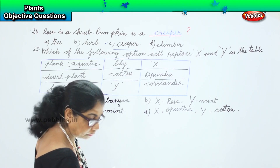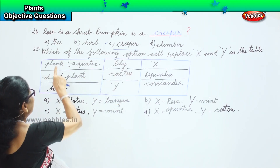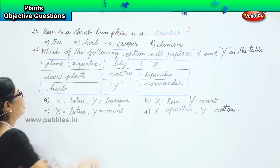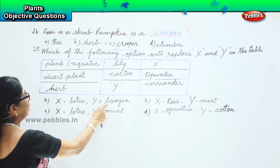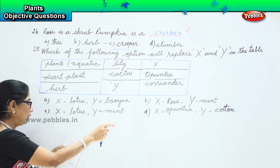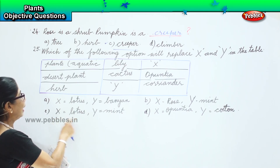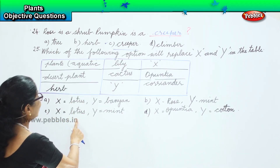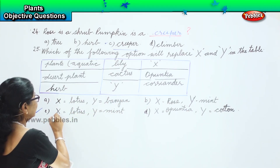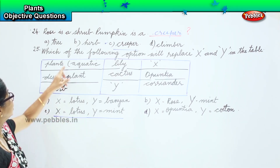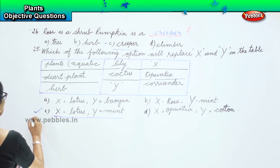Now we have to choose the answer. Which of the following option will replace X and Y in the table? We have plants: aquatic — lily; desert plant — cactus; herb — coriander. Option A: X is lotus — that's a water lily — and Y is banyan, it's a herb — no. Option B: rose — aquatic — no; mint — herb — yes. Option C: X is lotus, that's water lily, fine, that's an aquatic plant; Y is mint, that's a herb. So X is lotus and Y is mint — that's the correct answer. That's the 25th answer. Now we go to the 26th question.